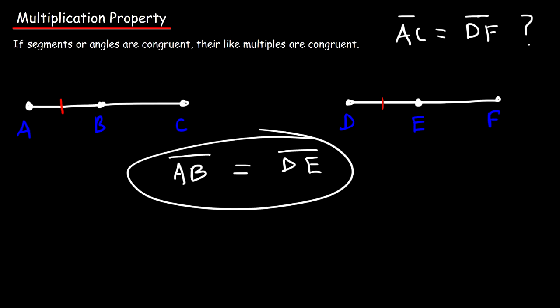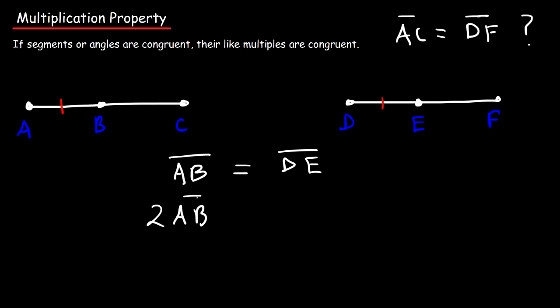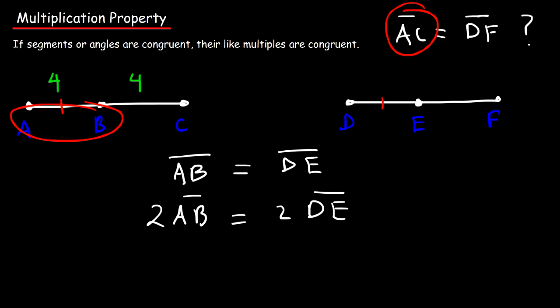Let's multiply both sides by 2. If we do that, we can replace 2·AB with AC. For instance, if AB is 4, then BC must also be 4 because B is the midpoint of AC — AB and BC must be the same. So AC is 8, and AB is 4; 2 times 4 is 8. We can therefore say AC is twice the value of AB, so 2·AB equals AC.